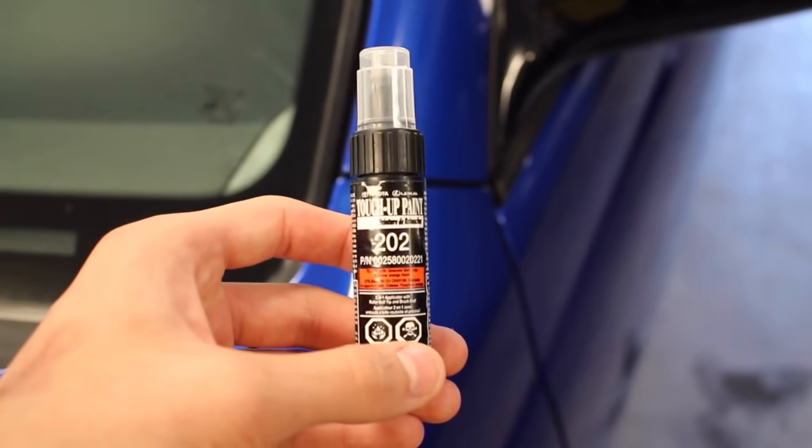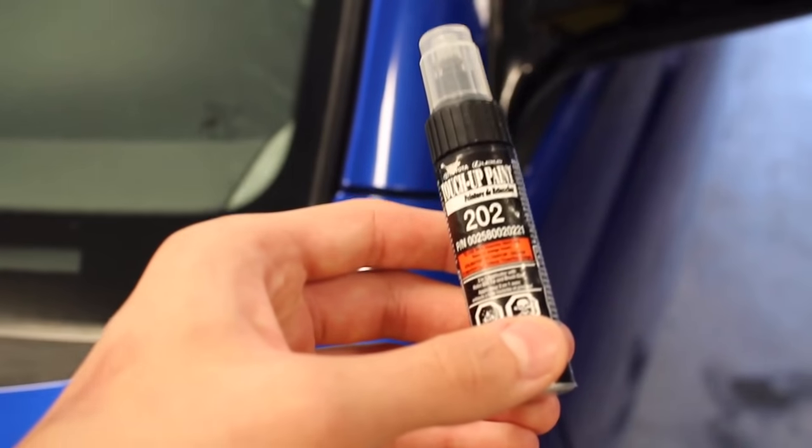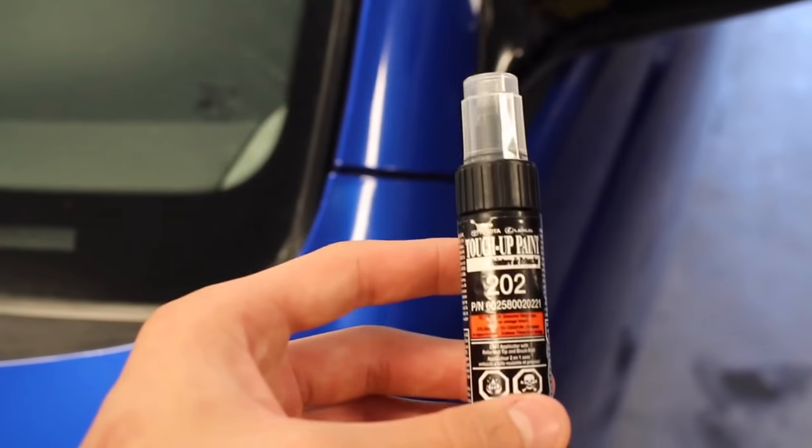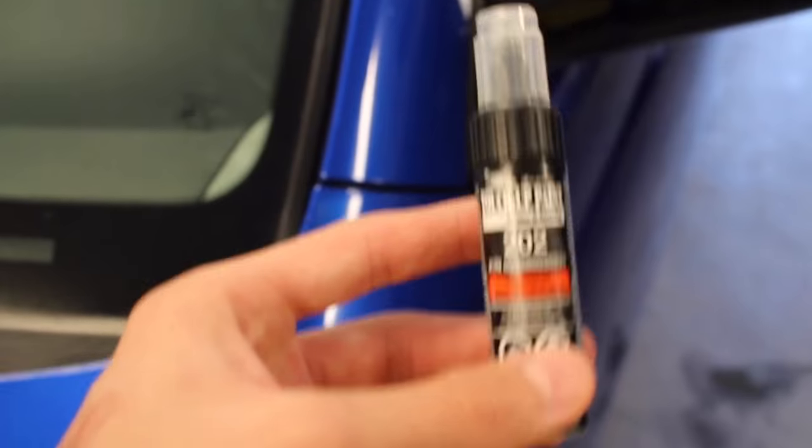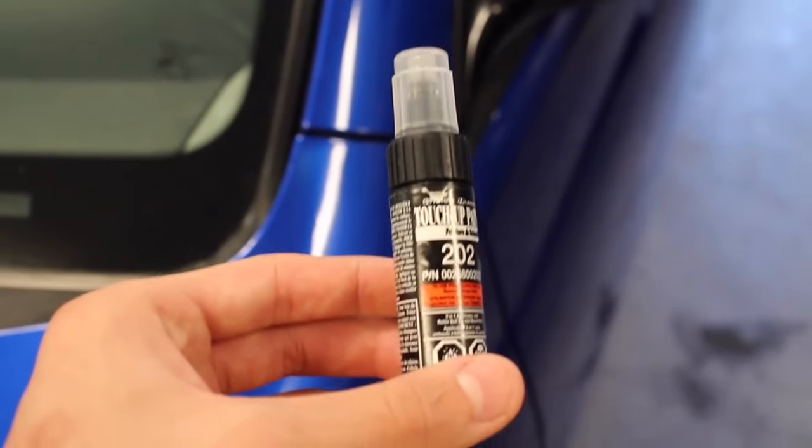Touch-up paint can be used on small rock chips and other defects in the paint. You're mainly doing this to protect the metal underneath the paint, because if you don't stop the rust from going on and you just leave it exposed, you can run the risk of rust, which will cause more damage to the car. If you just cover it up with touch-up paint, you should be good.